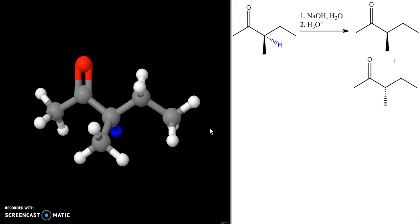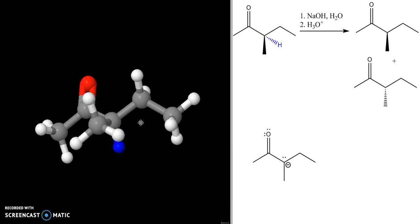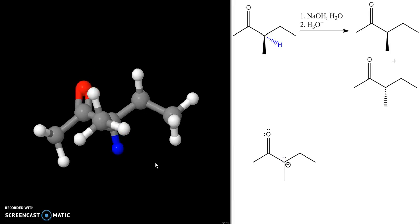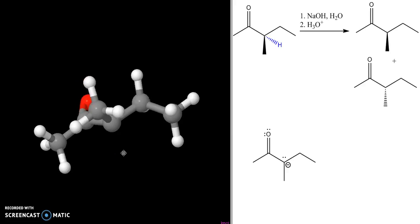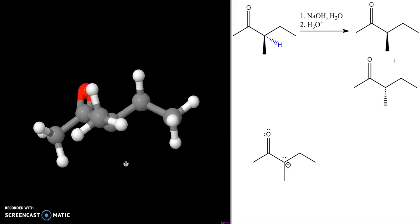When the base removes this hydrogen, the first thing we get is this anion. It's really important that we look at the structure of this anion. First thing that happens is the base comes and takes this hydrogen, so this hydrogen is gone.